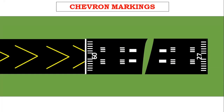Chevron markings: these are yellow markings aligned with the runway that show pavement areas unusable for landing, takeoff, and taxiing. A demarkation bar in yellow delineates the runway threshold from unusable pavement such as a blast pad or stopway. The demarkation bar is yellow since it is not located on the runway.